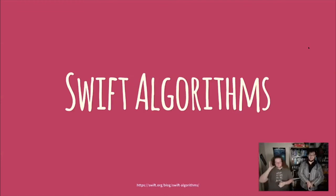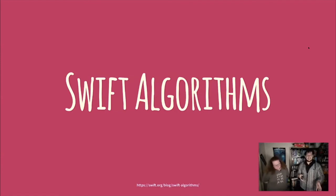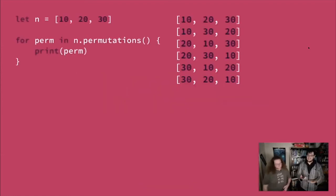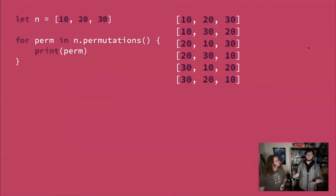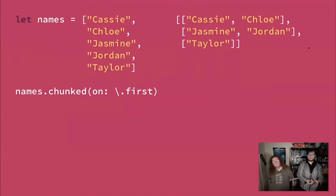Swift Algorithms is a bunch of reusable algorithms — think iter tools. It has highly tested and performant implementations of common algorithms. It's a testing ground for things that might later be included in Swift's standard library. Things like generating permutations from a set of numbers in an array — really useful for scientific computing. There's also chunking — weird name, but useful depending on what you're doing with Swift.